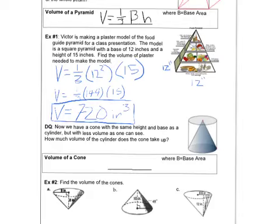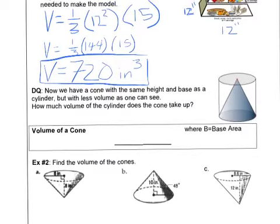So then I asked the class, well, if a pyramid is one-third of a prism, how much is a cone of a cylinder? And again, people thought one-half, one-fourth, three-fourths.